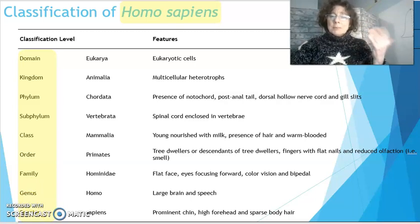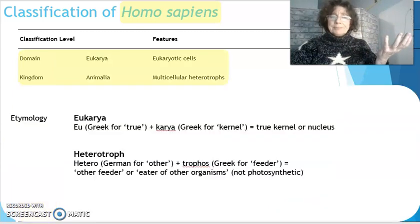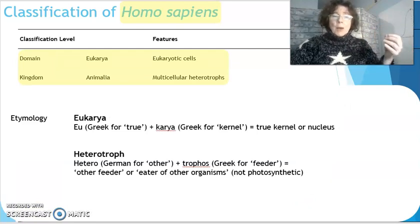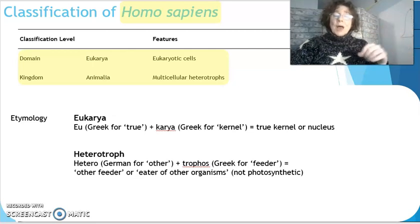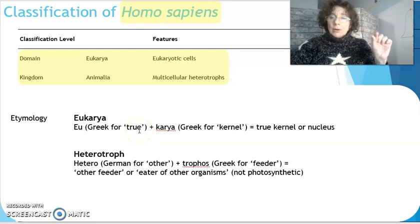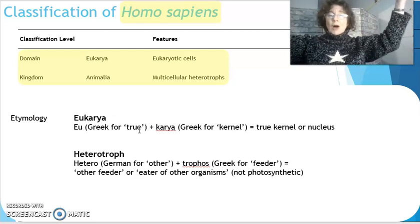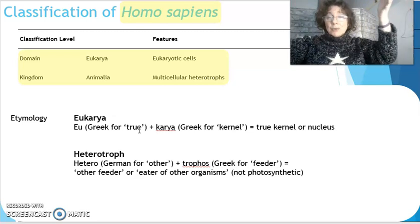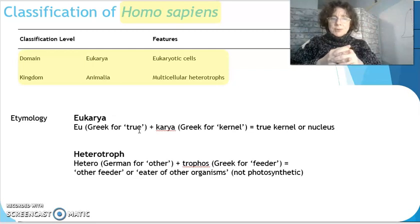When we talk about domain, we are the domain Eukaria, as opposed to Prokaria. Eukaria is Greek for 'true' — 'eu' meaning true — and 'karya' is Greek for kernel. Put together: 'true kernel,' describing the nucleus. So in the broadest, most inclusive classification, homo sapiens is in Eukaria because we have a nucleus in our cells.